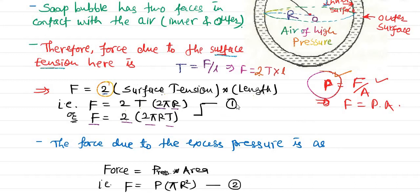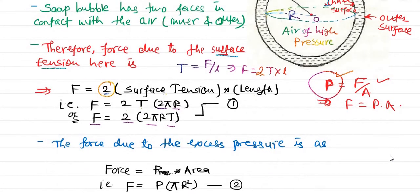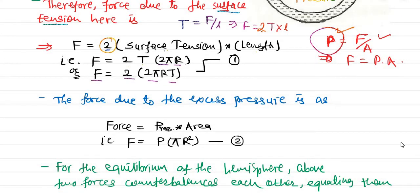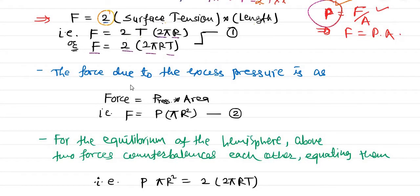We know these two forces — equation 1 and equation 2 — are balancing each other, so this particular bubble can maintain its spherical nature. To maintain the equilibrium of the bubble, these two forces must counterbalance each other, and therefore we equate them: P × πr² = 2 × 2πr × T.